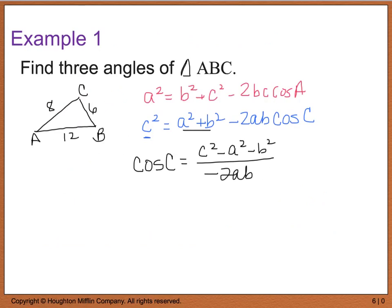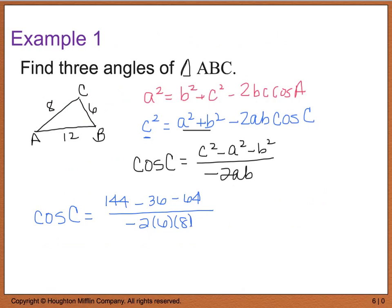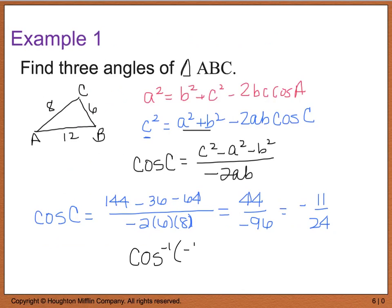Plugging in: cosine of C equals c squared (144) minus a squared (36) minus b squared (64), divided by negative 2 times 6 times 8. Simplifying gives 44 divided by negative 96, which reduces to negative 11/24. Taking the inverse cosine of negative 11/24 — make sure you are in degree mode — gives angle C equal to 117.3 degrees.